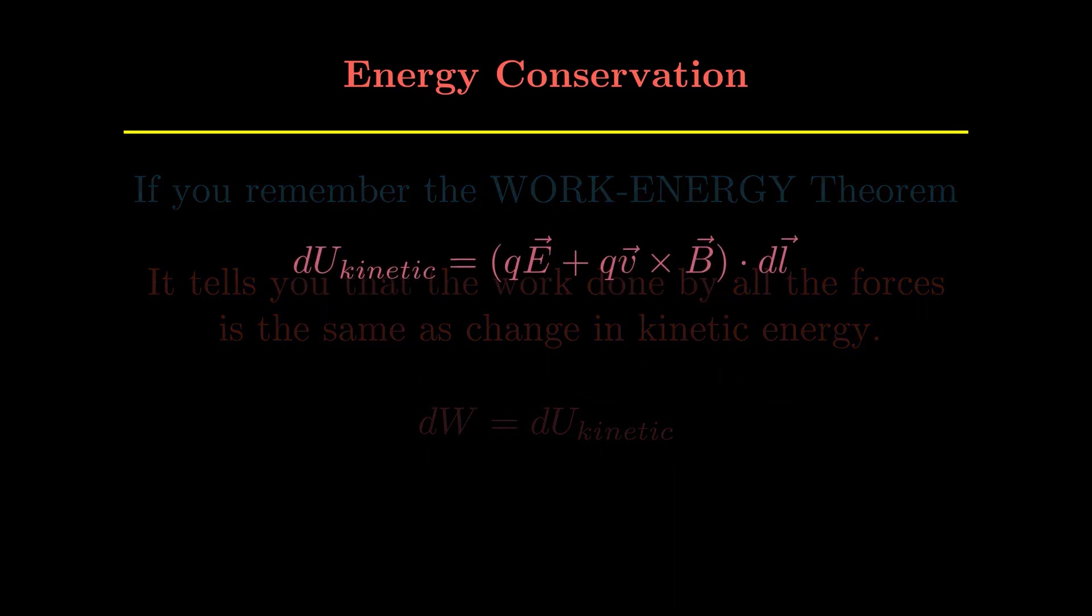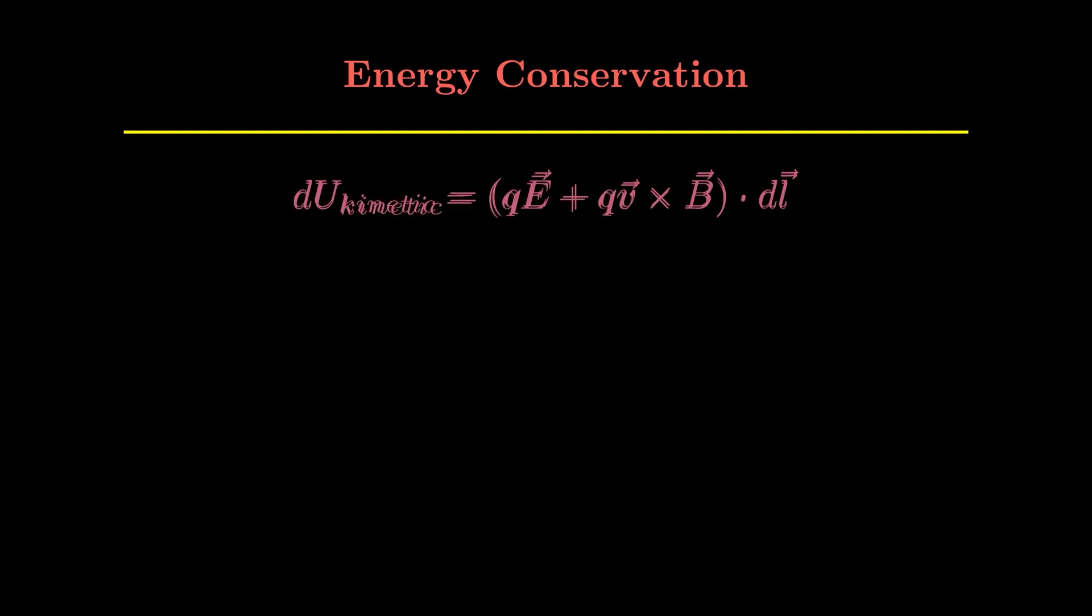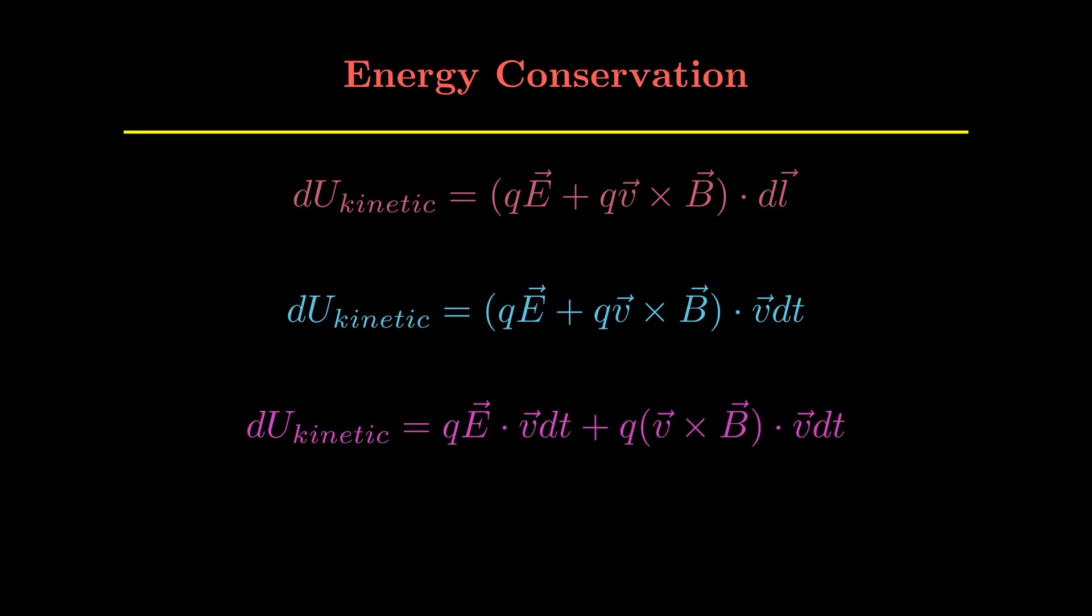And this can be written in this way. Now this dl vector can be written as v dt because it's a small displacement. Then separating out the terms and making the second term to be zero, because two perpendicular vectors when dotted with each other gives us zero, and we get du_kinetic to be this thing.